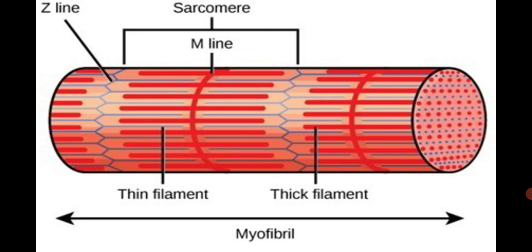The myofilaments along the myofibrils are arranged in a special contractile unit called the sarcomere. The myofibrils are contractile threads present along the whole length of the muscle fibers. Contraction of the myofibrils causes the muscle fiber cells to contract, and contraction of the muscle fiber cells or myocytes causes the overall skeletal muscle to contract, producing movement of our limbs and different organs.